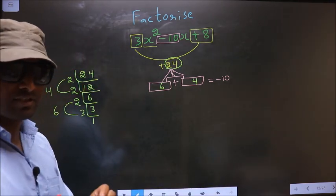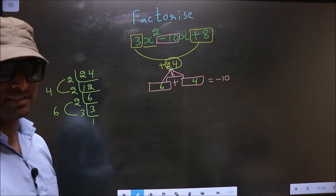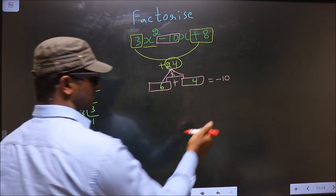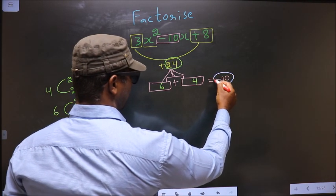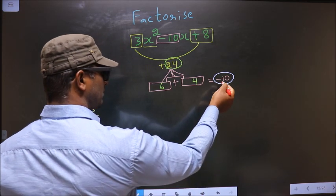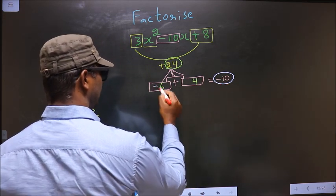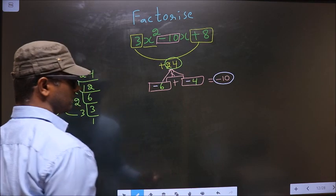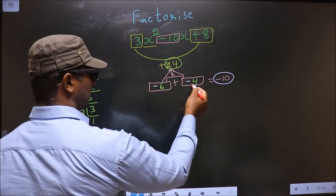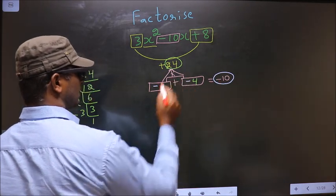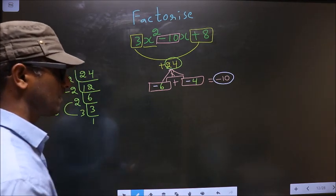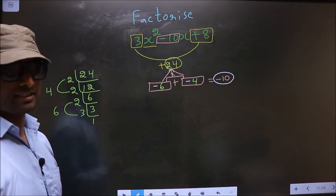Now we have to adjust the signs. Here we should get minus 10. To get minus 10, I should place negative here and also here. Minus 6 minus 4 is minus 10, minus 6 into minus 4 is plus 24. So we have adjusted the signs.